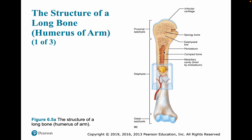Here is our diaphysis with our marrow cavity, generally filled with red marrow. Our proximal epiphysis — closer to the body — has compact bone on the outside, articular cartilage on the very outside, spongy bone in the center, and then a line where the epiphyseal plate used to be, which is now the epiphyseal line.